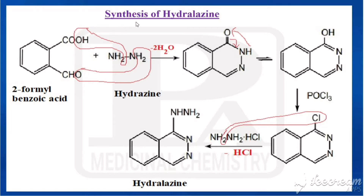In this class, we are going to see the synthesis of two antihypertensive agents: hydralazine and guanethidine. First, we will see the synthesis of hydralazine, for which we are taking the starting material as 2-formylbenzoic acid.